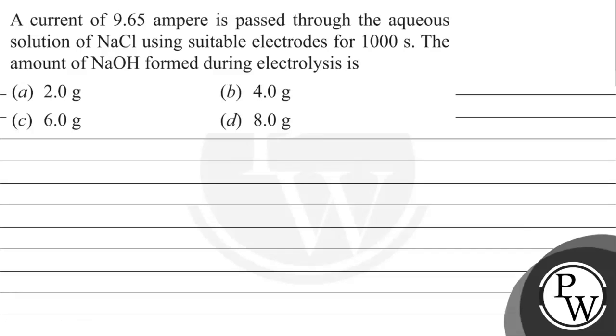Hello Bacho, let's read this question. The question says a current of 9.65 ampere is passed through the aqueous solution of NaCl using suitable electrodes for 1000 seconds. The amount of NaOH formed during the electrolysis is.